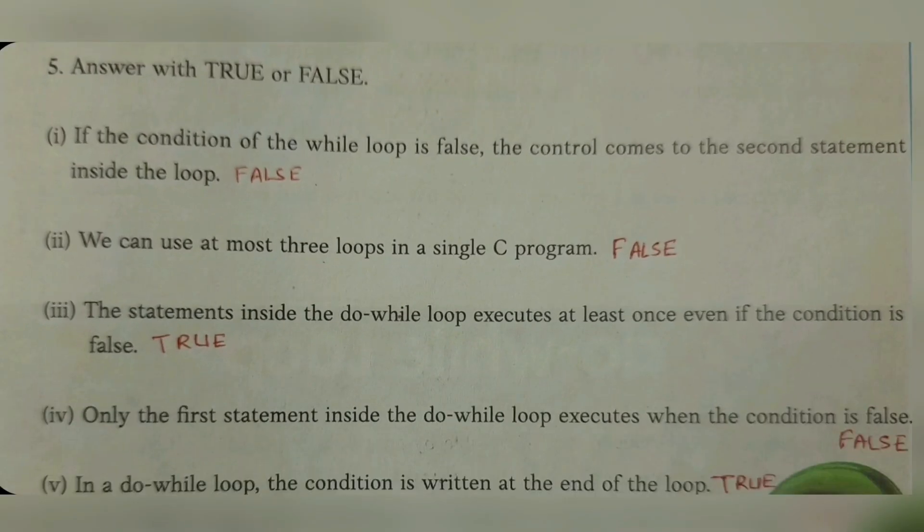True or false. The first one: if the condition of the while loop is false, the control comes to the second statement inside the loop. It will be false—the control will come outside the loop, not inside. Number two: we can use at most three loops in a single C program. It is false—we can use as much as we want. Number three: the statements inside the do-while loop execute at least once even if the condition is false. It is true.